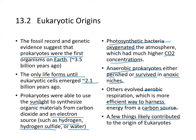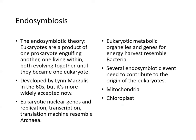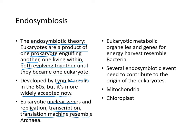A few things likely contributed to the origin of eukaryotes. The endosymbiotic theory is the idea that eukaryotes are the product of one prokaryote engulfing another, with both evolving together until they became one eukaryote. This idea was developed by Lynn Margulis in the 1960s. Eukaryotic nuclear genes for replication, transcription, and translation resemble those of archaea, while eukaryotic metabolic organelles and energy-harvesting genes resemble those of bacteria.